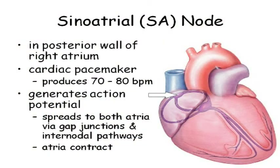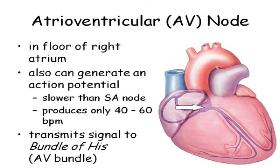Because the SA node cells are the leakiest, they depolarize more quickly, and the rest of the cells have to follow them — that's why the SA node is the pacemaker. These cells spontaneously generate their action potentials about 70 to 80 times a minute, giving a resting heart rate of 70 to 80 beats per minute. If something happens to the SA node, the AV node can take over, though it's slower, giving a heart rate of 40 to 60 bpm — sufficient for everyday activities but not for athletes. If both nodes are damaged, an artificial pacemaker must be implanted.